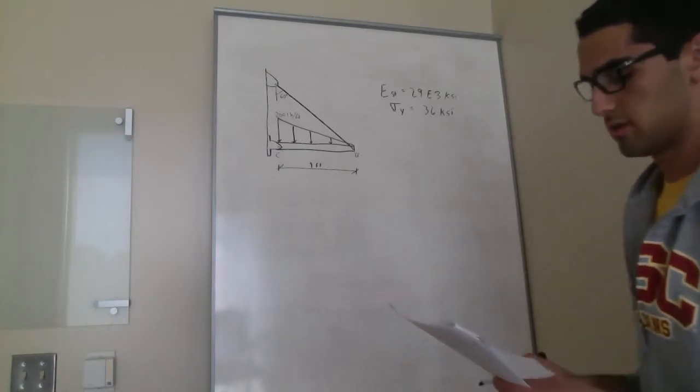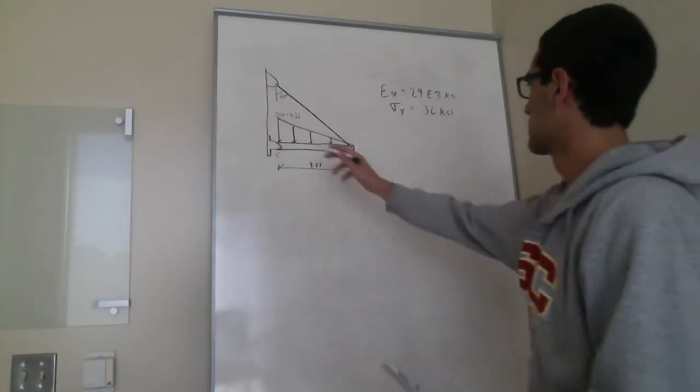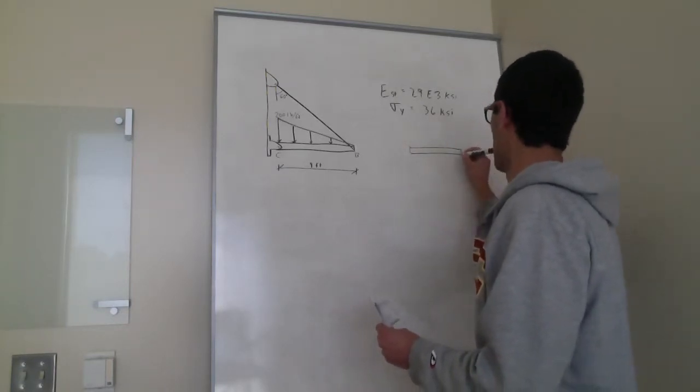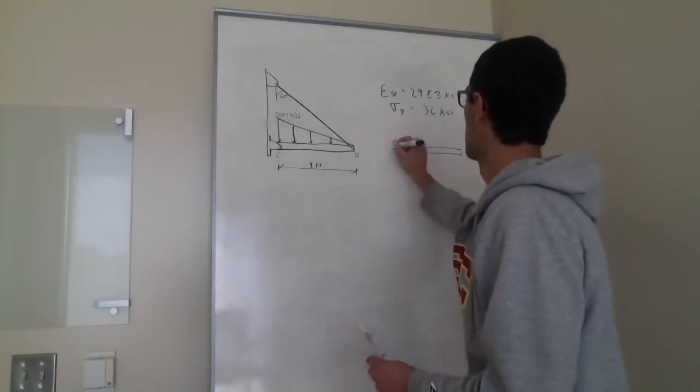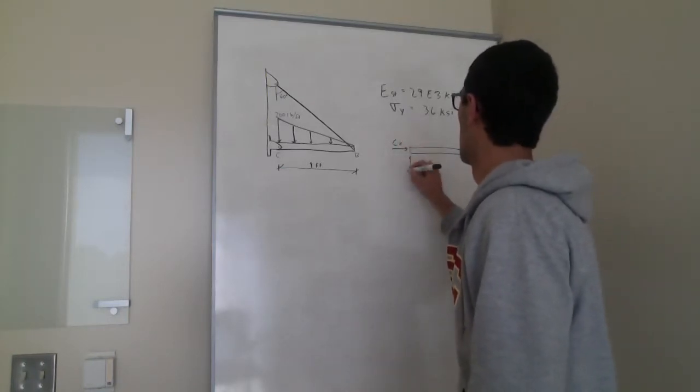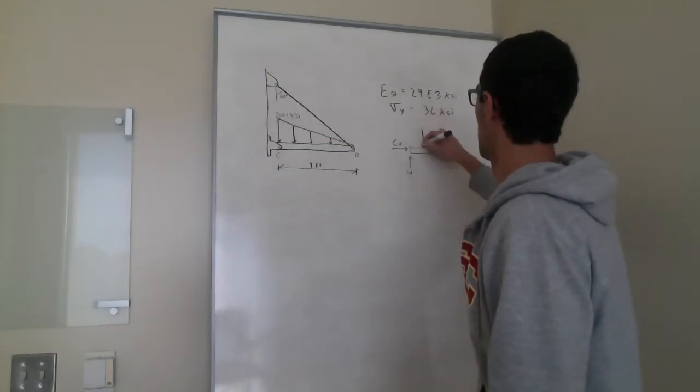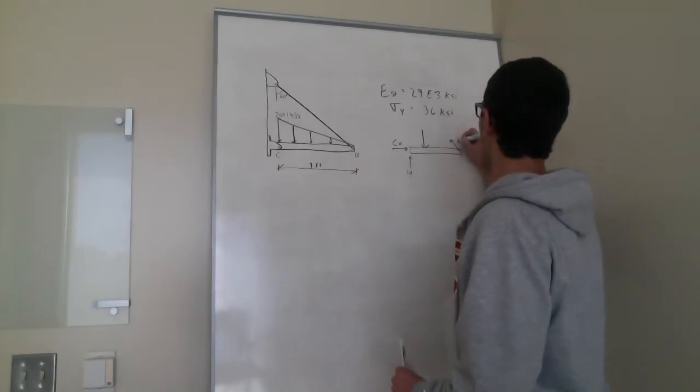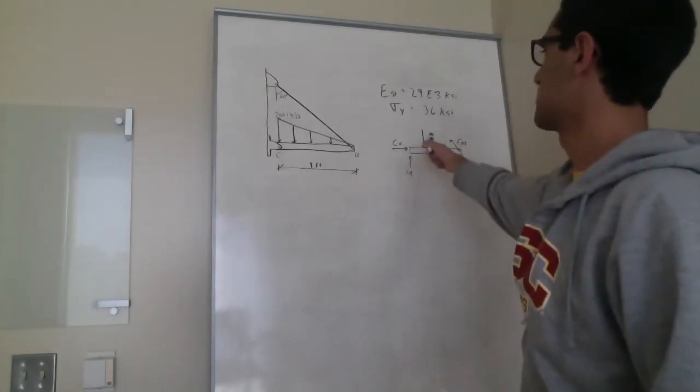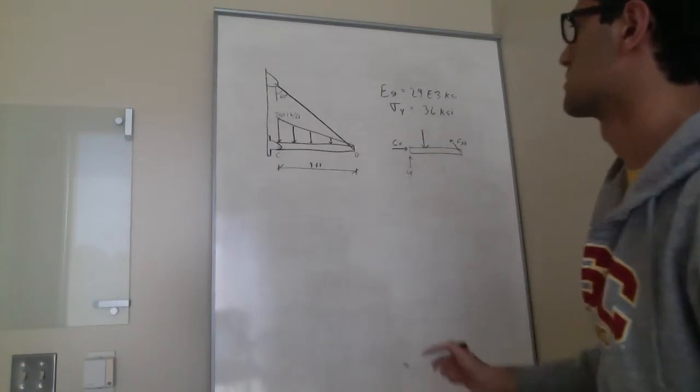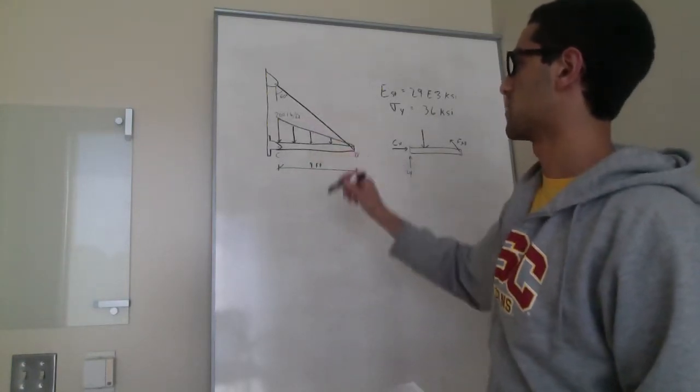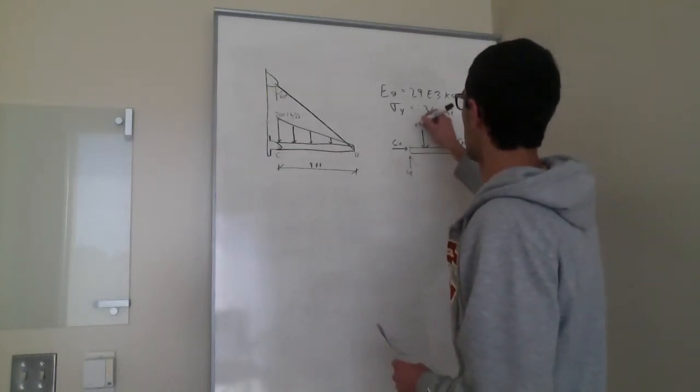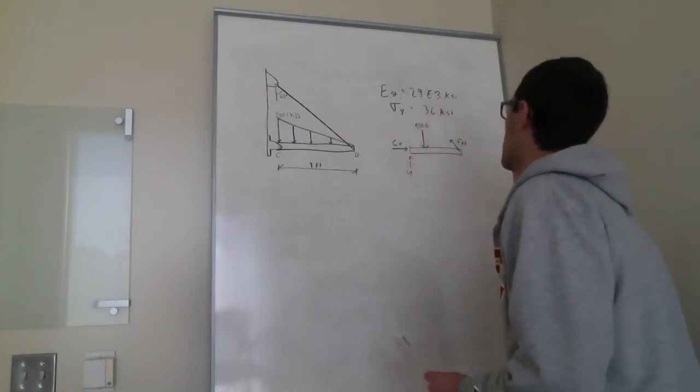The first thing we are going to do is a free body diagram. So this force here is the distributed load, which is base times height divided by 2 since it's a triangle. So that's going to be 900 pounds.